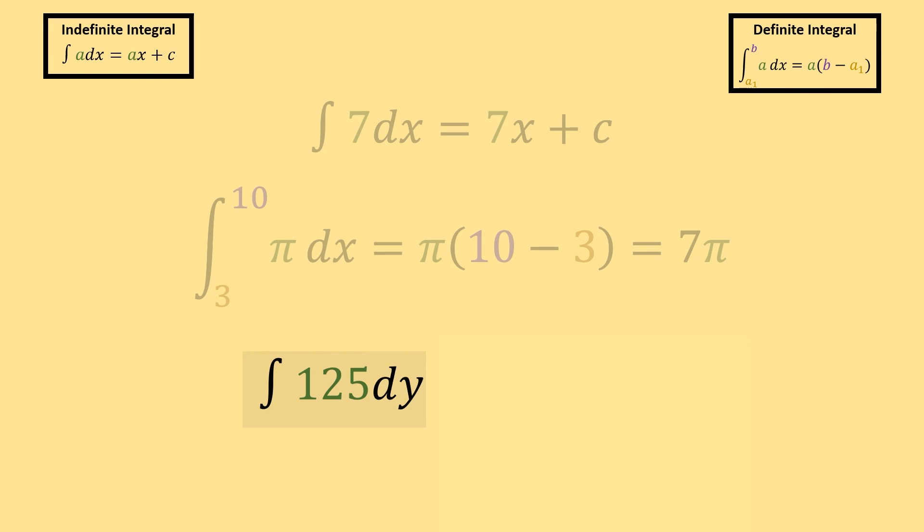Now, let's take the integral of 125 dy. This is an indefinite integral, and so we're going to use this formula up here. And instead of dx, we have dy, so really all that changes is the variable that we're going to multiply with on the right side. So, our constant's 125, so we get 125, times our variable y this time, plus c.